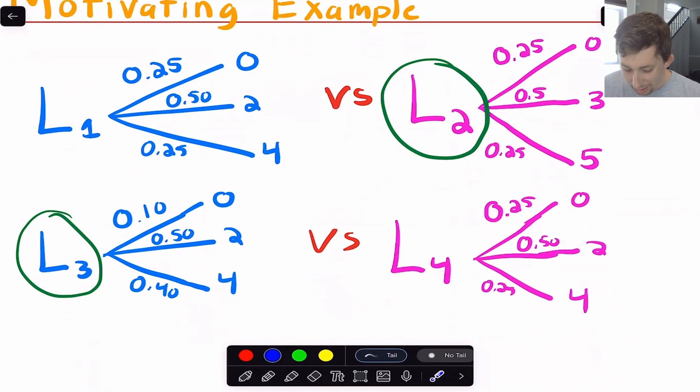So again, I ask you just to think about which lottery you would prefer. I personally would prefer Lottery 3. The reason I would prefer Lottery 3 is I have a lower chance of getting 0 and a higher chance of getting 4 as compared to Lottery 4. So even though the payoffs haven't changed, I have a lower chance of getting the low payoff and a higher chance of getting the high payoff. The chance of getting the middle payoff stayed the same. So I would rather have Lottery 3.